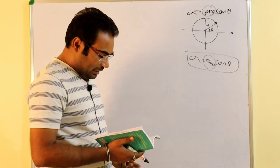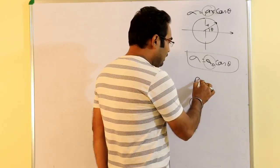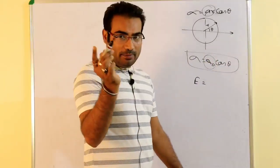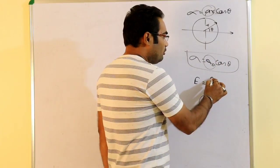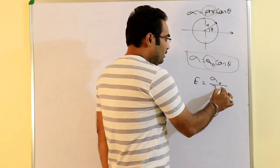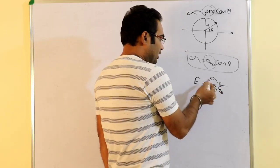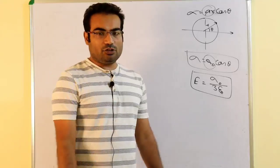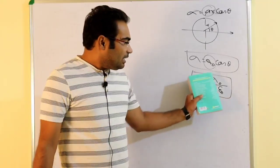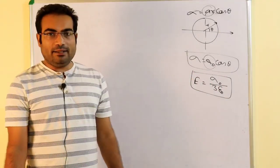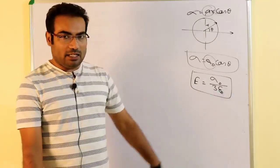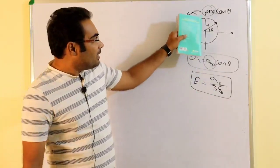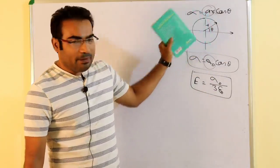In terms of surface charge density, sigma equal to AR cos theta or sigma equal to sigma naught cos theta — the electric field value that comes here: in question 16 what we had written was electric field equal to sigma naught by 3 epsilon naught, and it was in the negative direction because it was in the direction of the negative charge.